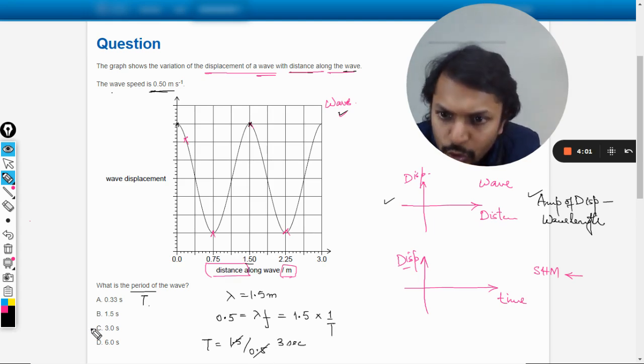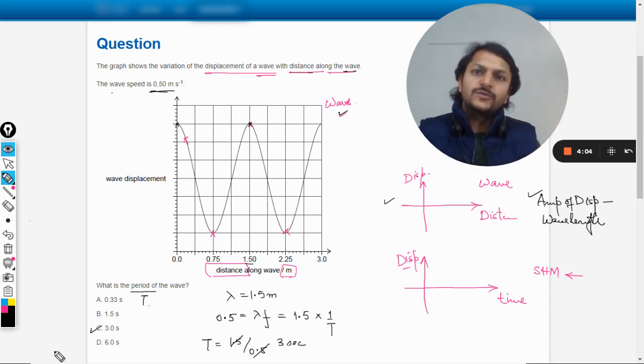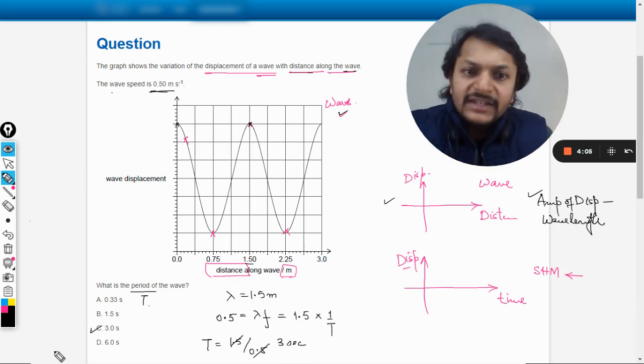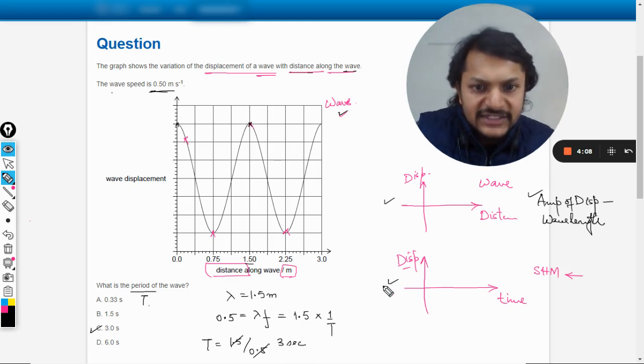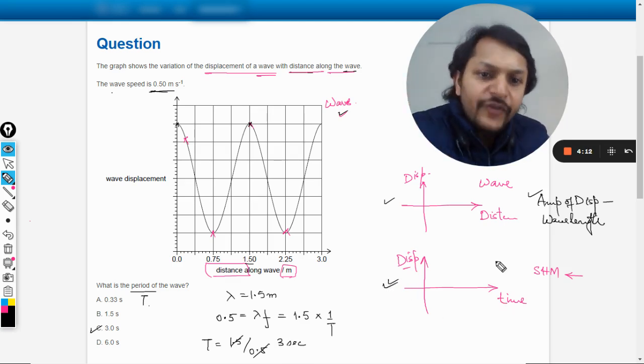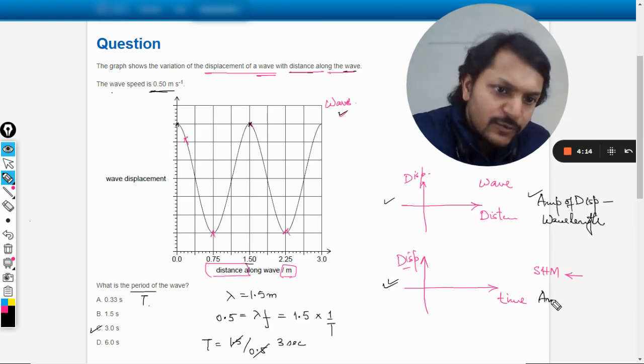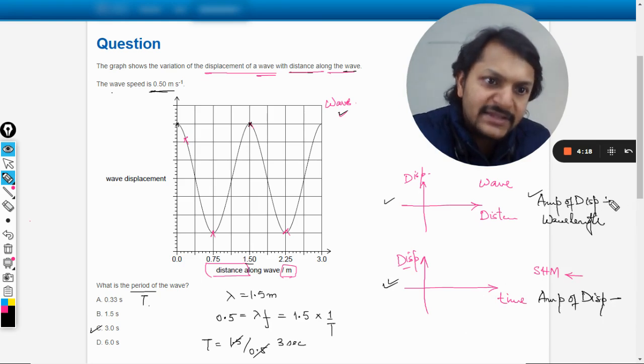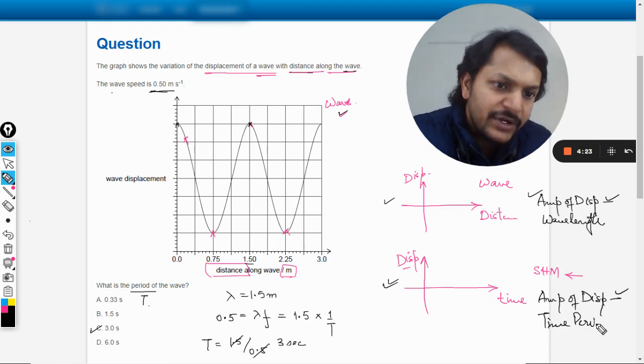So this is what we have found. But instead of this graph, if this graph was given - let's say you could have directly found the time period from this graph - you could have found two things. What are they? Again, the amplitude of the displacement, the same as this, but instead of wavelength you would be able to find the time period.